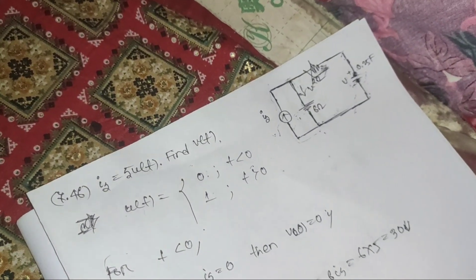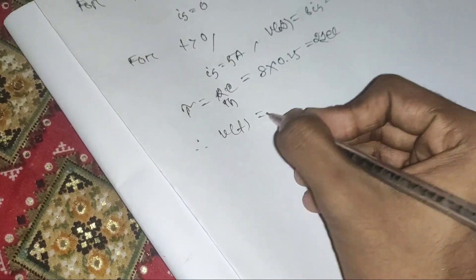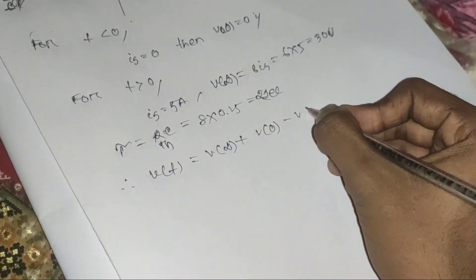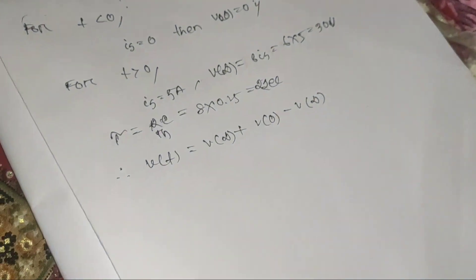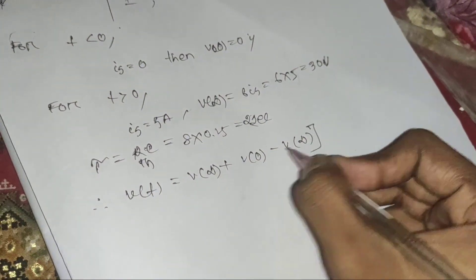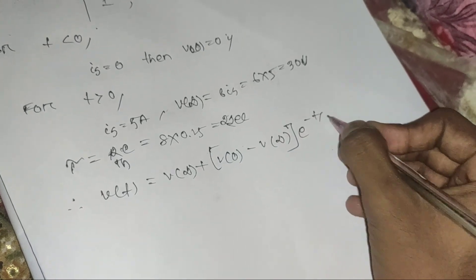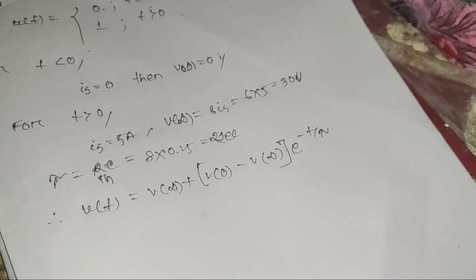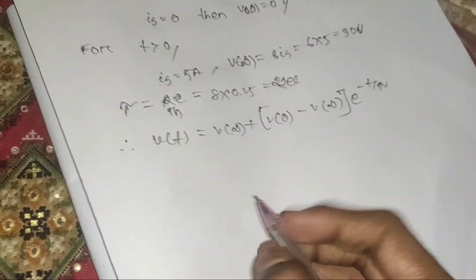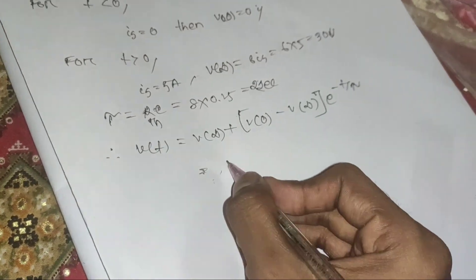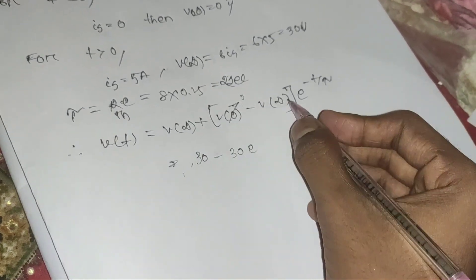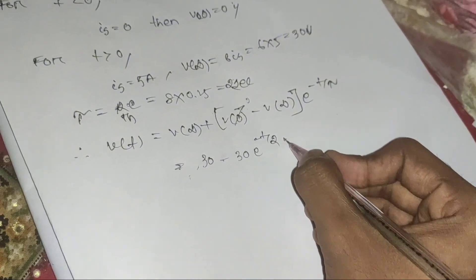With C = 0.25 F, τ = 8 × 0.25 = 2 seconds. Using the standard first-order equation v(t) = v∞ + (v₀ − v∞)·e^(−t/τ), with v∞ = 30 and v₀ = 0, the answer for problem 7.46 is v(t) = 30 − 30·e^(−t/2) volts.